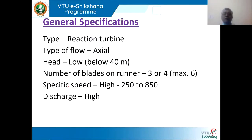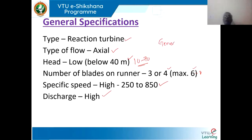In general specification, the working head is 10 to 70 meters, but below 40 meters it works most efficiently. It is an axial flow reaction turbine. Generally, the number of blades will be 4 to 8. Specific speed will be between 250 to 850. Discharge is high. When these conditions exist, we prefer the Kaplan turbine.